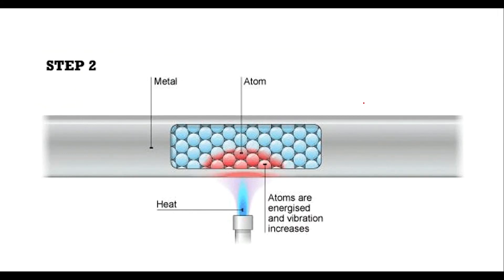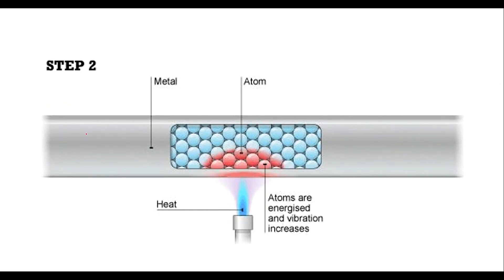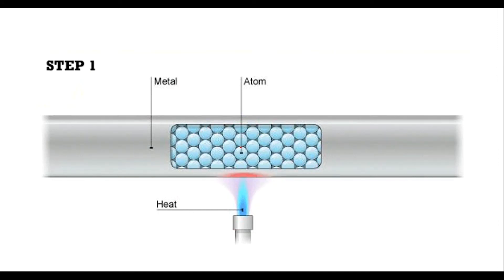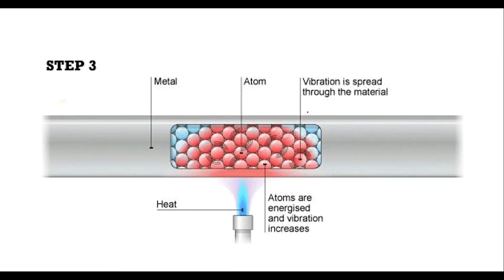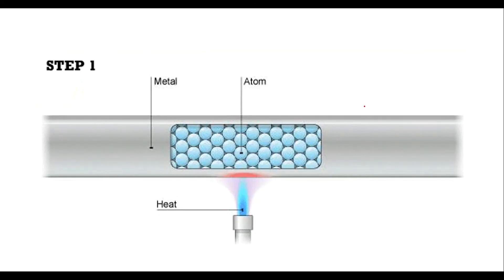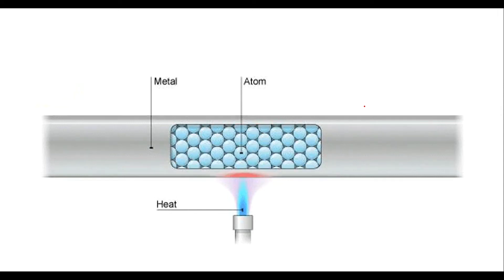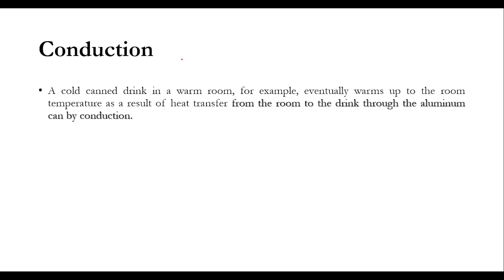Looking at the animation: this is a metallic rod in which atoms are present. Heat is transferred to the atoms, atoms are energized, vibration increases, and as a result heat transfers from more energetic particles to the less energetic particles. Another example: a cold canned drink placed in a warm room will warm up after some time — heat transfers from the room to the drink through the aluminium can by conduction.